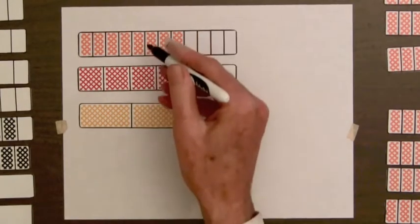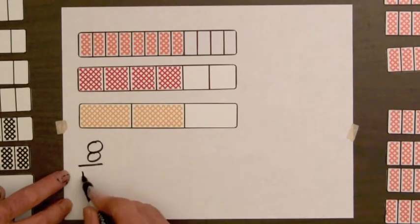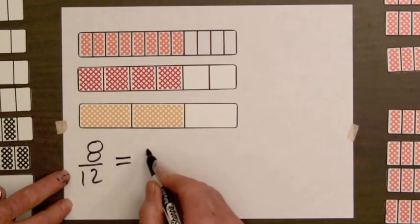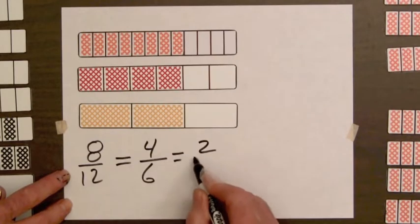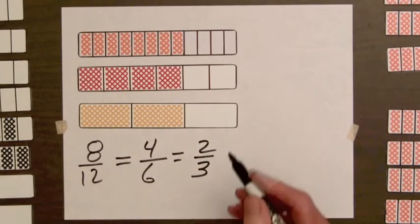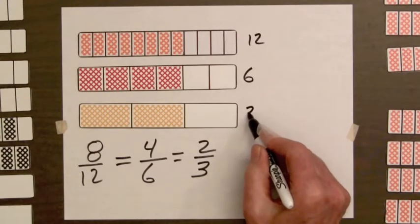The fractions for these bars are all equal because the bars have the same shaded amount. So we have eight twelfths equal four-sixths, equal two-thirds, and we have our twelve parts here, six parts here, three parts here.